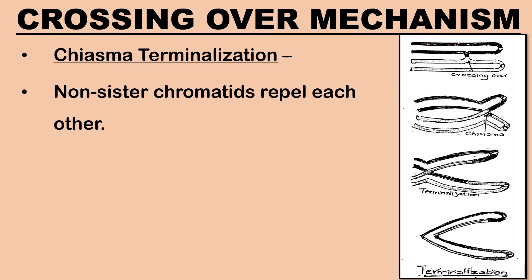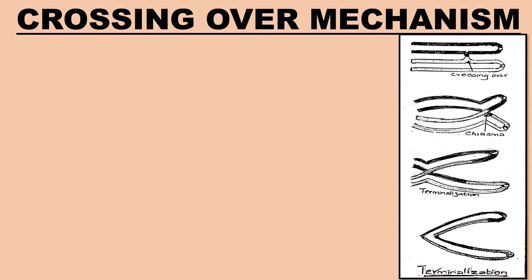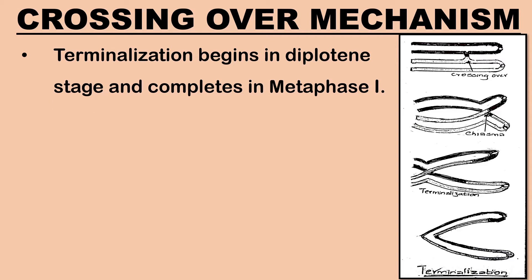The interstitial type is changed to terminal position by chiasma terminalization. After crossing over, the non-sister chromatids repel each other due to lack of attraction between them. The movement of chiasma away from the centromere towards the end of the tetrads in order to separate the chromatids is known as terminalization. Terminalization of chiasma begins in the diplotene stage and is generally completed in the diakinesis stage or in metaphase one.